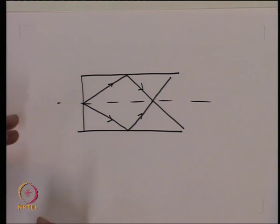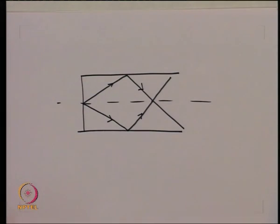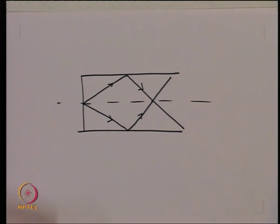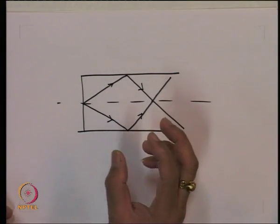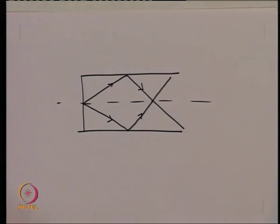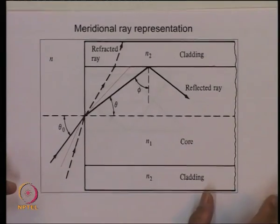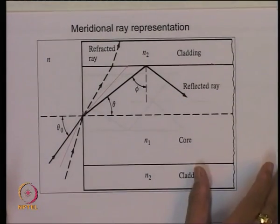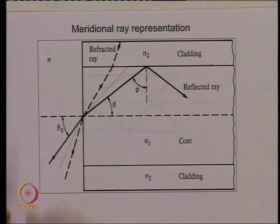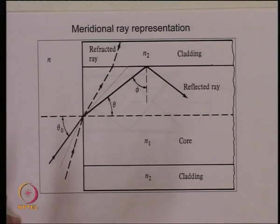In this case, the rays repeatedly meet on the axis of the optical fiber, so you expect maximum intensity at the axis. If we consider rays launched in a plane containing the axis, the ensemble of these rays produces a light intensity distribution inside the fiber with maximum intensity at the axis.